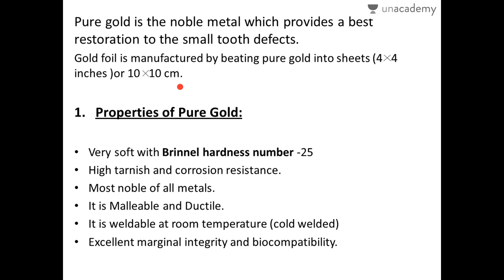The properties of pure gold: it is highly soft with a Brinell hardness number of 25 — this is very important from an objective point of view. Gold also has high tarnish and corrosion resistance, which is advantageous in preventing caries recurrence. It is the most noble of all metals.